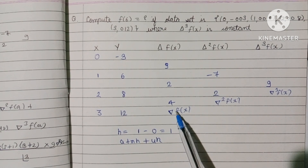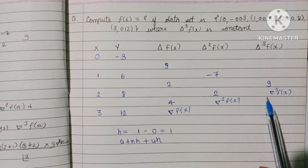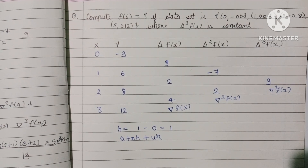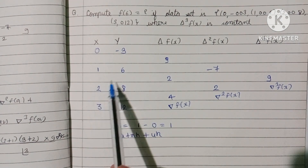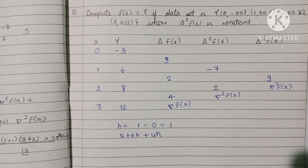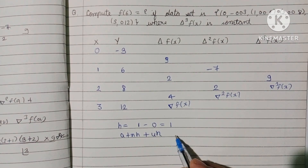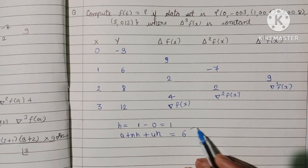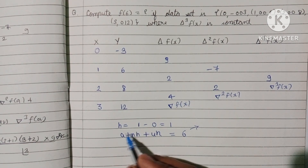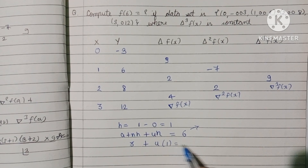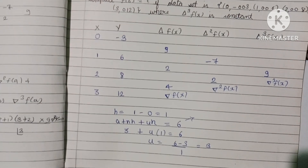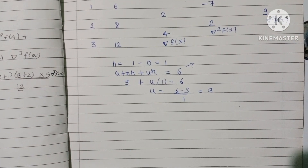The step size h is the difference between x values, which is 1 - 0 = 1, and all other differences are also the same. To find the u value, we use the formula: a + n·h + u·h = 6. Here a + n·h is the last x value, which is 3, so 3 + u·1 = 6, giving u = (6 - 3) / 1 = 3.